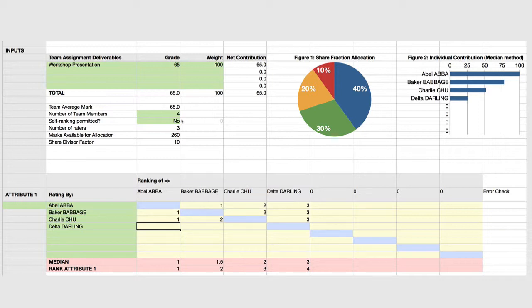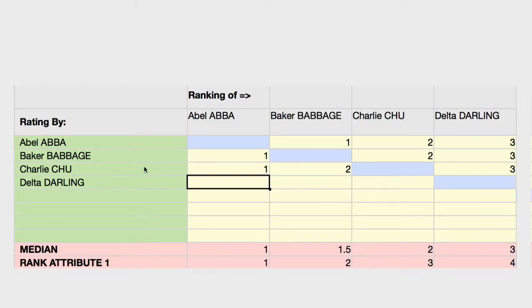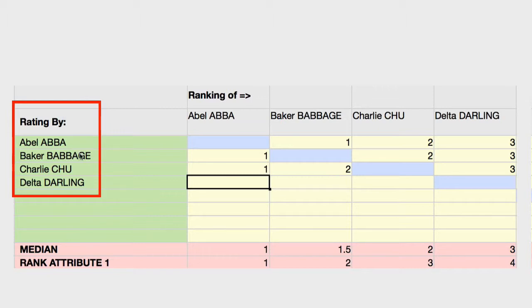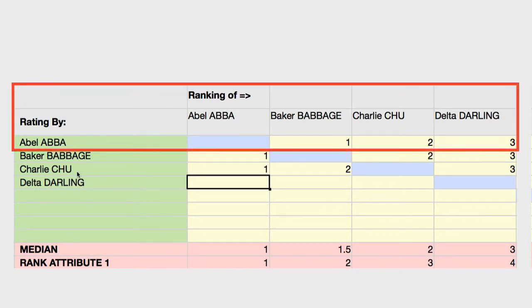Let's take a quick overview. Here we have a team comprising four members: Abel Abba, Baker Babbage, Charlie Chu, and Delta Darling. Already we see that Abel has rated the contribution of Baker Babbage as first, making Baker the best contributor to the team, with Charlie Chu second and Delta Darling third.